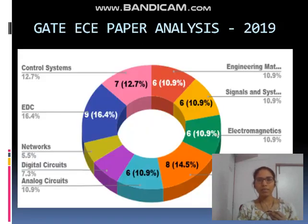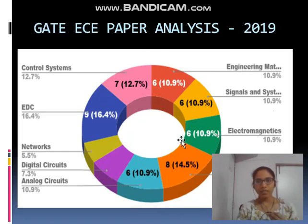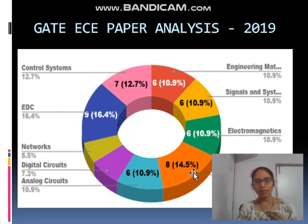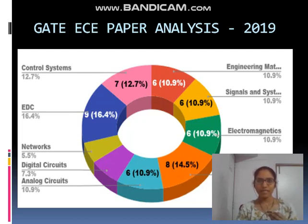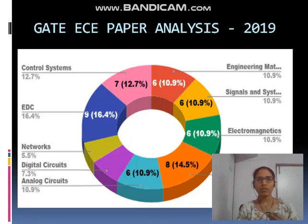So this was about the detailed syllabus. Now if you look at the paper analysis of 2019, you can see that communication forms a major part of the paper. EDC, control system, and communication have formed a very large part of the question paper and more or less this remains the same every year. Being the electronics and communication engineering stream, there will always be more weightage given to communication as it is considered to be the basic of electronics and telecommunication.